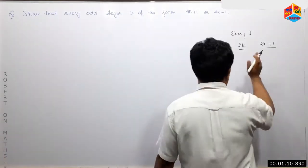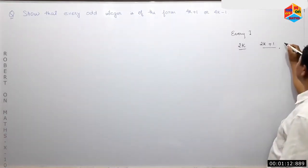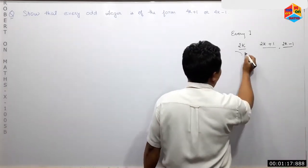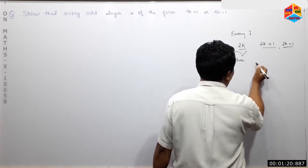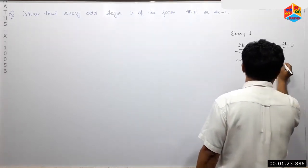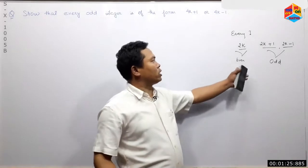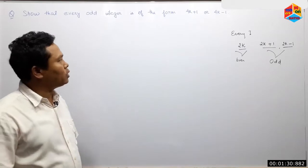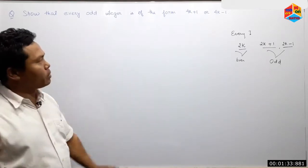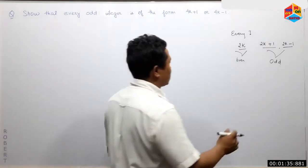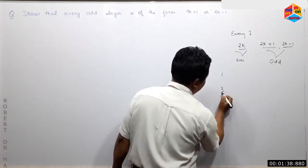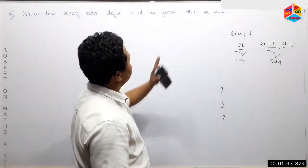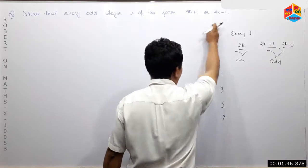These are 2k plus 1 forms. The integer of 1 is 1 of the integer. Every integer has 8. What is the integer? 1, 3, 5, 7. This is 4k plus 1 or 4k minus 1.